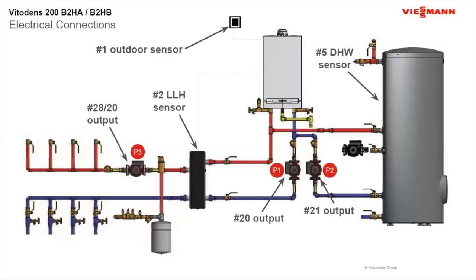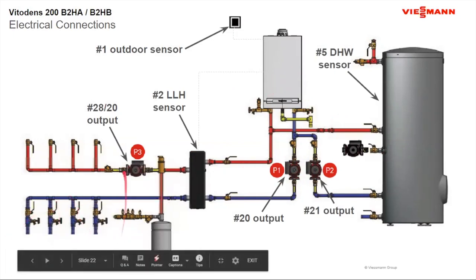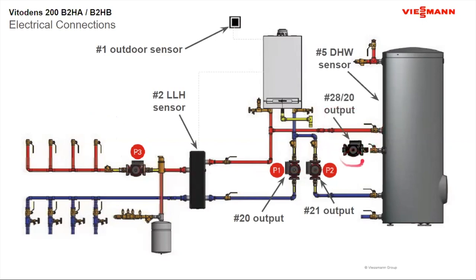Looking at pump placements on the piping diagram: the number 20 pump output is our boiler pump, which activates the flow switch or flow sensor inside the boiler. The 2820 pump output can be either a system pump or a recirculation pump. When programming, there are time programs for DHW recirculation — meaning a loop constantly circulating hot water around the house so you have hot water immediately when you open a faucet. You can program the times you want it to run and shut off.